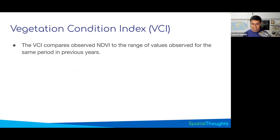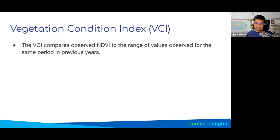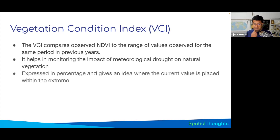To compute VCI, at every pixel you need to find what was the minimum and maximum NDVI for the past 10 years. For example, in the first week of May over the last 10 years, a pixel might have had a minimum NDVI of 0.2 and a maximum of 0.5. Once you have that, you compare the current NDVI: if it's close to 0.2, it's very bad — close to the historic minimum. If it's close to 0.5, it's near the historic maximum, so conditions are good. This tells you the current vegetation condition compared to historic averages.